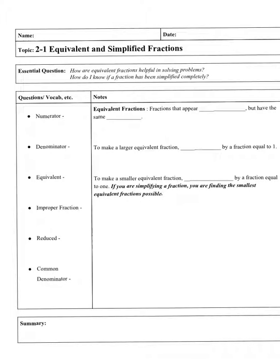Okay, here we go. We're on Chapter 2 now and all of Unit 2 is working with fractions. We're going to start with the basics that we need with fractions. Now that you guys have been doing greatest common factor, this is going to make more sense to you hopefully. Our essential questions today are: How are equivalent fractions helpful in solving problems? And how do I know if a fraction has been simplified completely? I've already kind of talked about both of those in class but we'll see where we get with this.